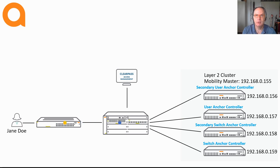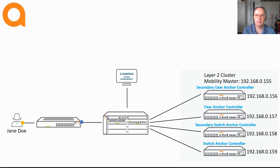There are always two data plane connections between the switch and the controller cluster, unless there is only one controller left. The controller with the primary data plane connection is called the user anchor controller, and the backup data plane controller is called the secondary user anchor controller. The user anchor controllers are fully load balanced, meaning any controller in a cluster can be a switch anchor controller, secondary switch anchor controller, user anchor controller, or secondary user anchor controller. This is what makes the dynamic segmentation architecture so robust and scalable, and also very easy to deploy — all of this happens under the hood. You only need to configure the switch to connect to a cluster, and on the mobility controller side, create a layer 2 cluster.